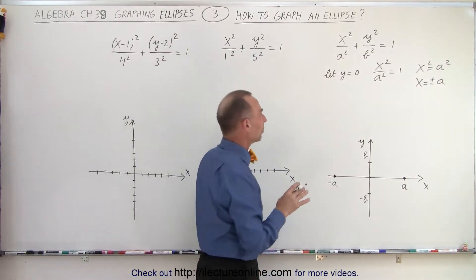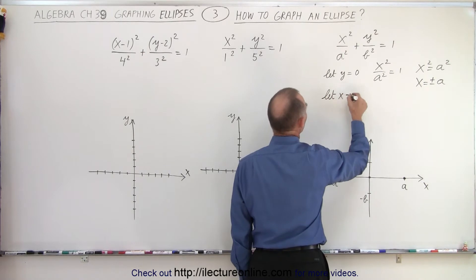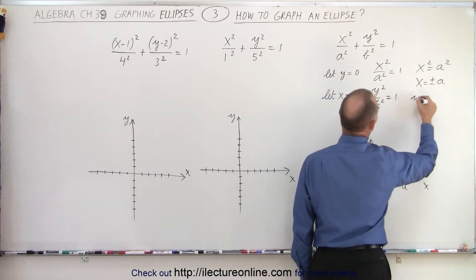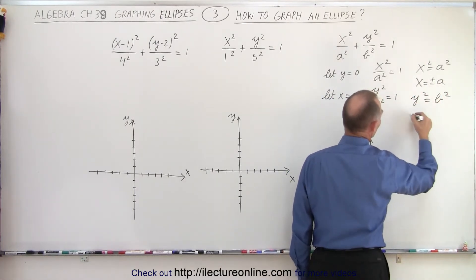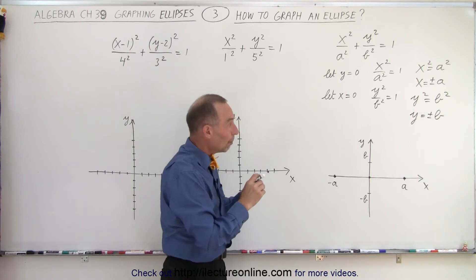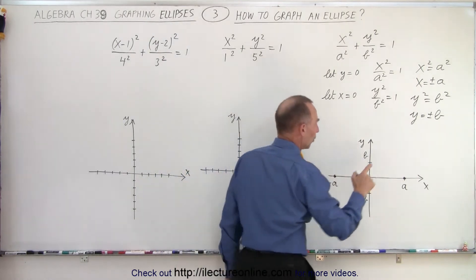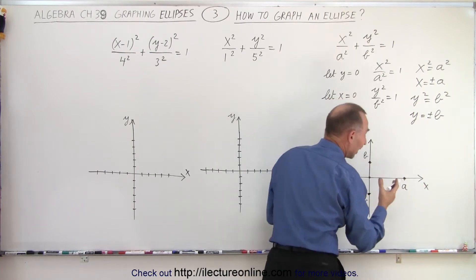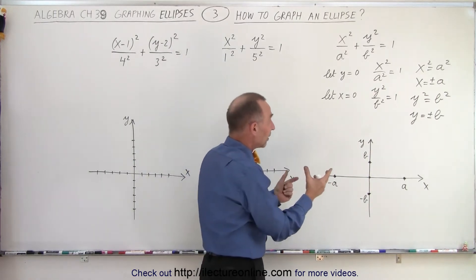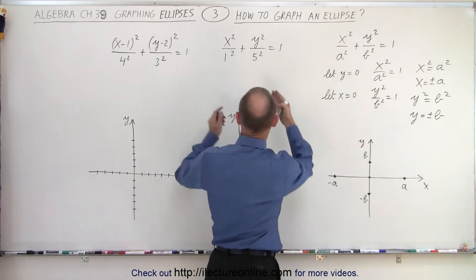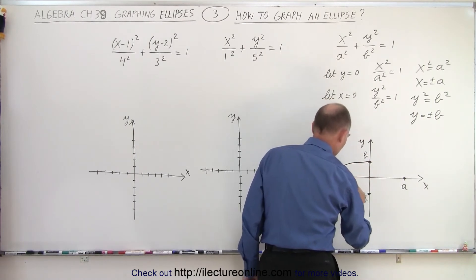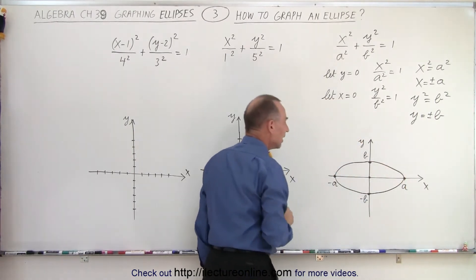Now we do the same but let the other variable be 0. Let x = 0, which means y² / b² = 1, or y² = b². Taking the square root gives y = ±b. Again, we take both answers in order to graph it. So +b is one point and −b is another. You can see that depending on the values of a and b, the shape of the ellipse is going to be different — the shape is determined by those values.